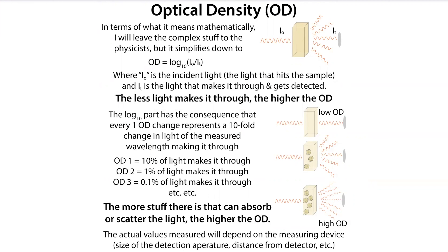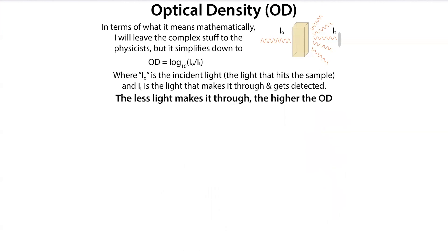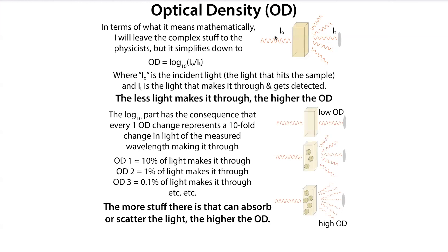Let's talk a bit more about what optical density actually means mathematically. It simplifies down to: OD equals log₁₀ of I₀ divided by IT, where I₀ is the incoming incident light and IT is the transmitted light that actually makes it through to the detector. The more light is lost, the higher the OD. Because of the log₁₀, a change of one OD represents a tenfold change in the light making it through. So at an OD of one, 10% of light makes it through; an OD of two is 1%; an OD of three is 0.1%; and so on.